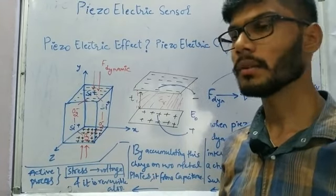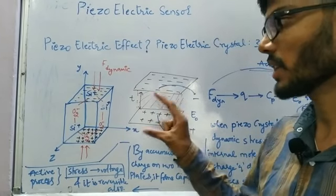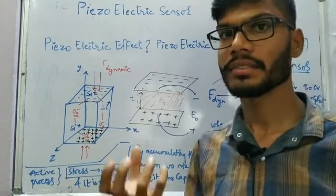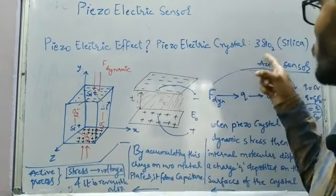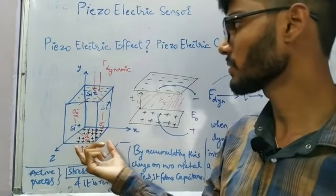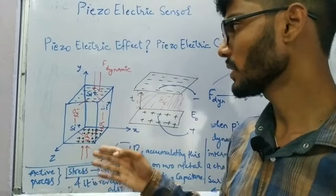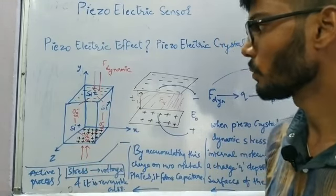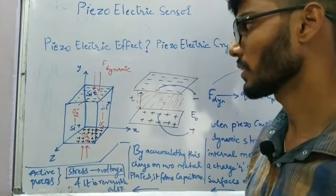The number of pieces depends on the geometry, which is not our main concern. Our concern is understanding what exactly happens inside the crystal. This crystal has three molecules of SiO2, giving it six sites — three sites with Si⁺ and three sites with O2⁻ — forming a hexagonal structure.